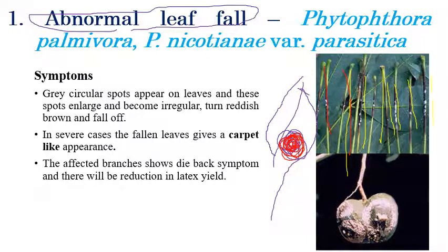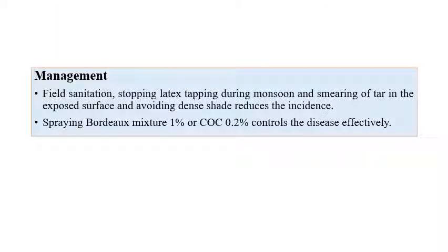The carpet-like appearance of fallen leaves is a key diagnostic symptom of Abnormal Leaf Fall. The disease also shows dieback symptoms in later stages. Yield — that is, latex production — can be completely reduced due to this disease. It is a very serious and important disease in rubber production. For management, field sanitation is very important.